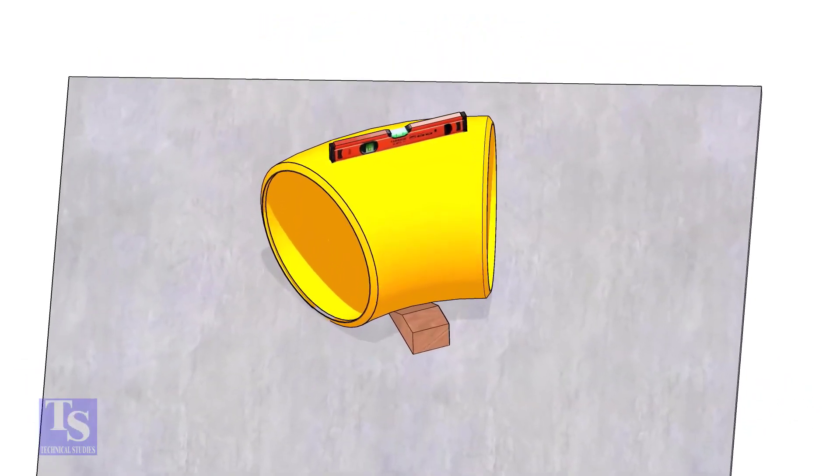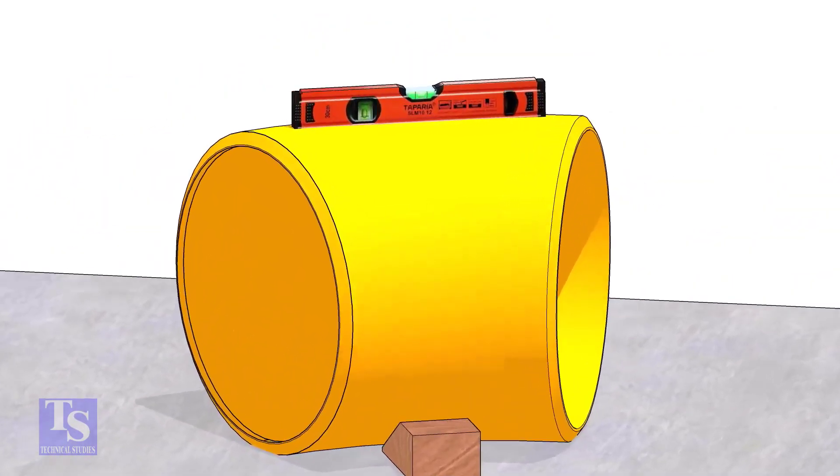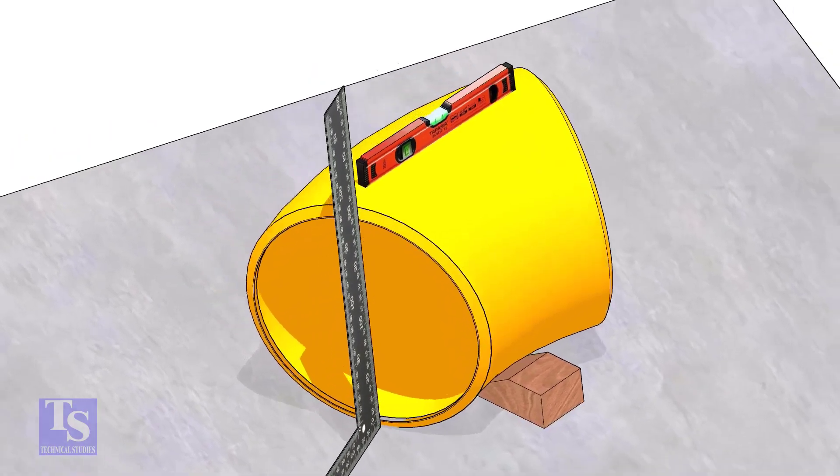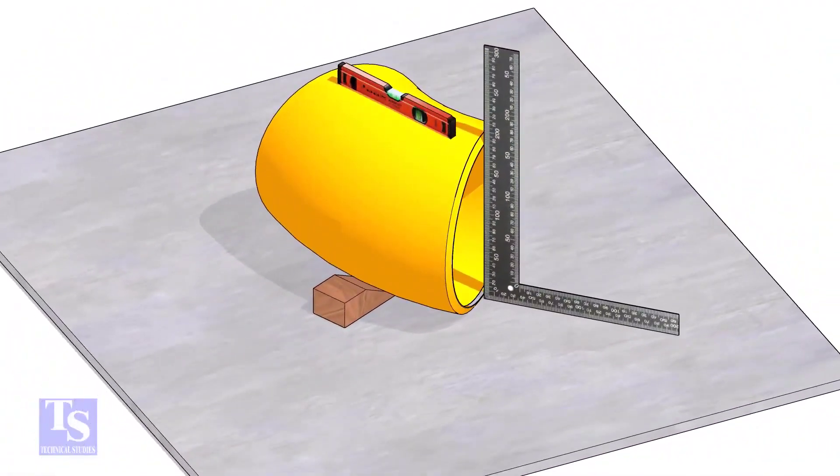Put one elbow on a straight plate. Check the top level. Make the faces of the elbow right angle to the plate. Put packing on both sides and fix the position of the elbow.